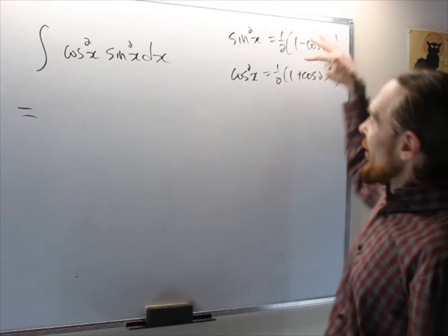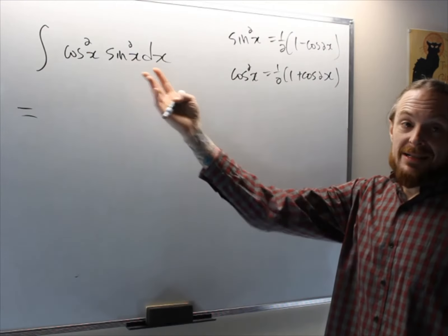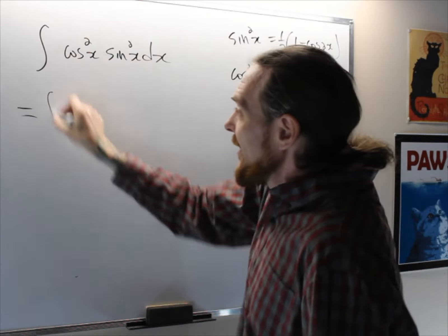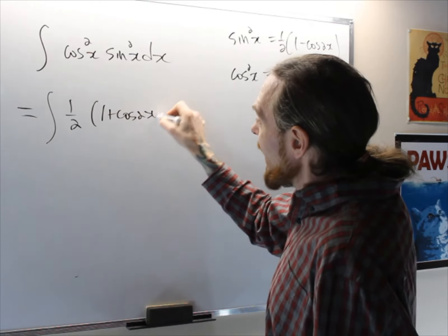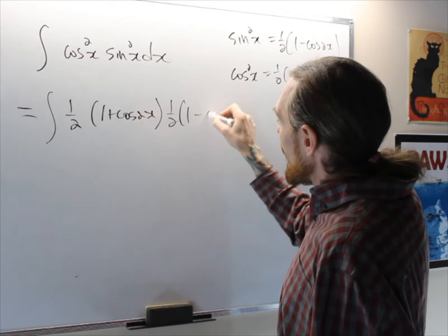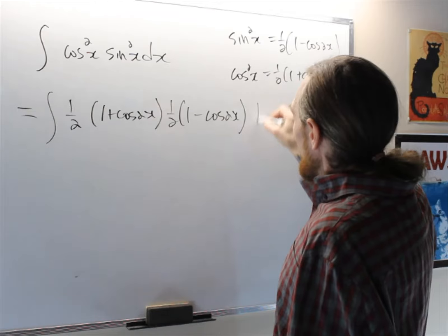So equals, the first thing I'm going to do is just substitute those in there because I have no other choice, I don't have a differential. The idea is now I get 1 half 1 plus cos 2x, and this was 1 half 1 minus cos 2x.